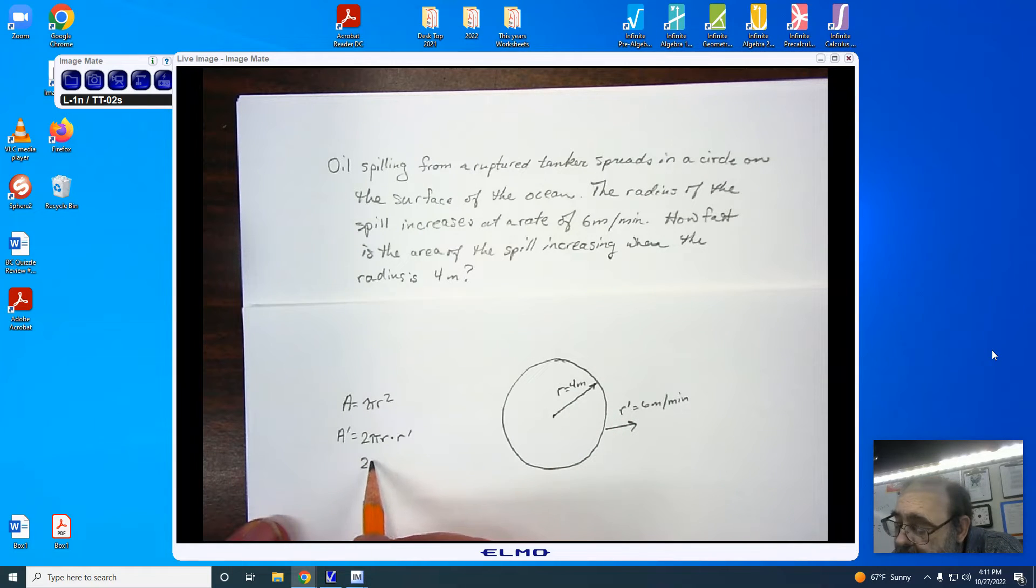So we have our area's rate of change is 2 pi multiplied by 4 meters multiplied by 6 meters divided by minutes. As we multiply, you'll notice I get 12 times 4,